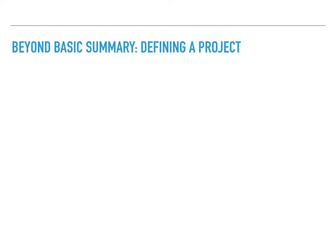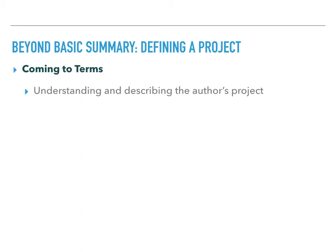So first, an overview. Coming to terms has a lot in common with summary, but it's the more advanced version of it. Summary is basically trying to condense down a text into a much smaller unit. By contrast, coming to terms is not necessarily about condensation, though it is usually involved. Instead, it's about making sure that we fully understand and describe not just what the author does, but how and why they do it in a particular way.